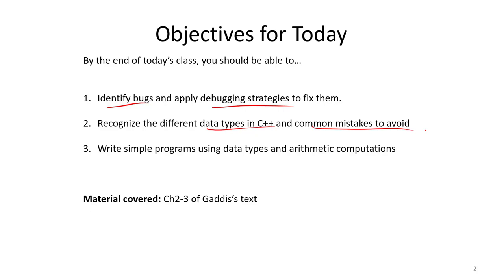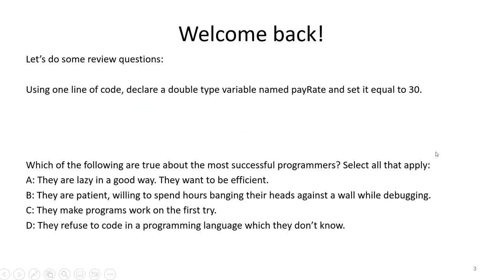So, very common and very important to know how to write these kinds of programs. Let's do a couple quick review questions before we move on. This first question asks us to use one line of code to declare a double type variable named payrate and set payrate equal to 30. We also have a multiple choice question. Take a moment and think about these — you can pause the video if you want, and then we'll discuss.